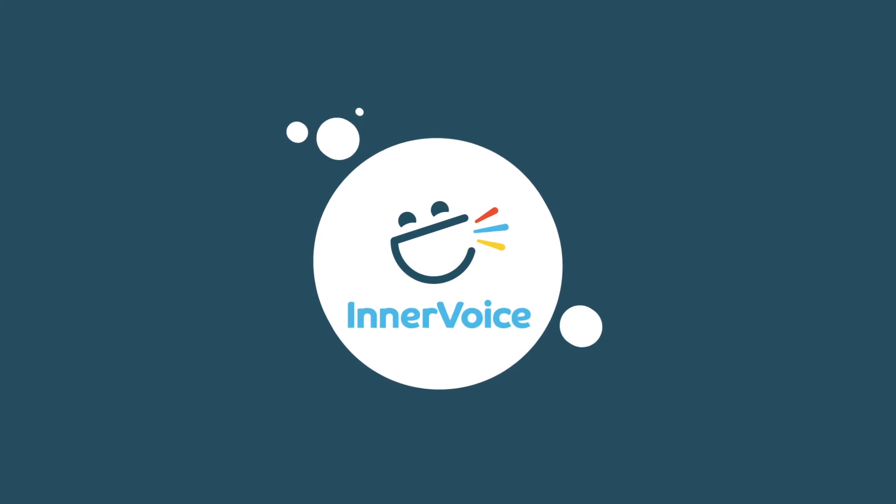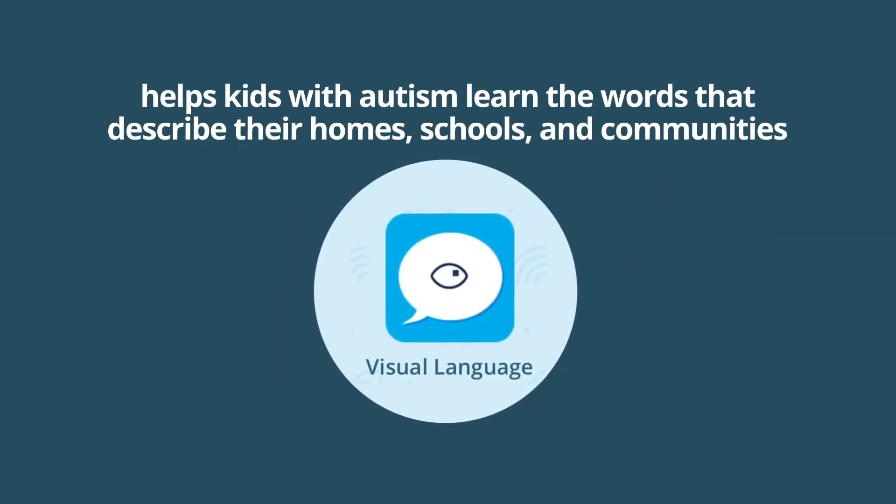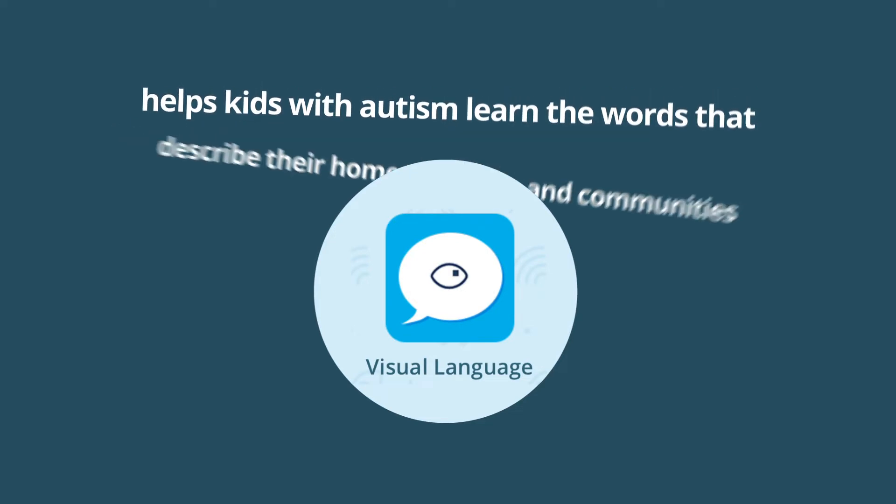Inner Voice's visual language is a unique tool that helps kids with autism learn the words that describe their homes, schools and communities.